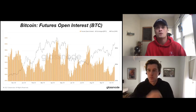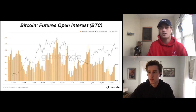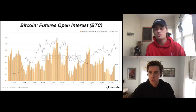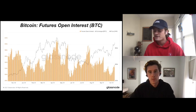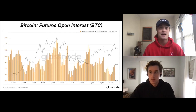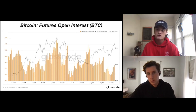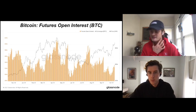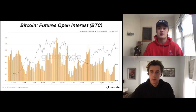Here we have Bitcoin futures open interest, denominated in Bitcoin. If you're looking at this chart denominated in dollars, it looks a lot like the price chart. But when you're looking at it in Bitcoin terms, it can give you a sense of how much leverage is in the system — how significant the derivatives market is as a percentage of total supply. The larger this gets, the more the derivative market is a driver of price.